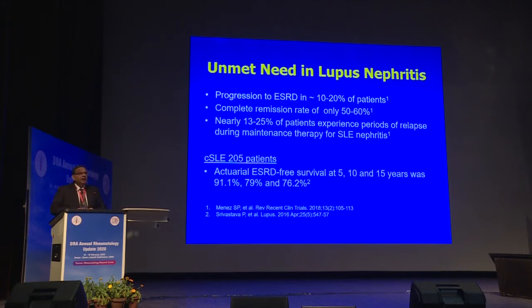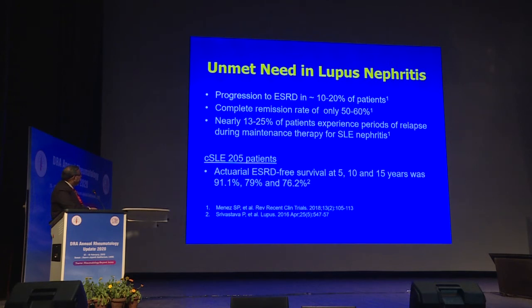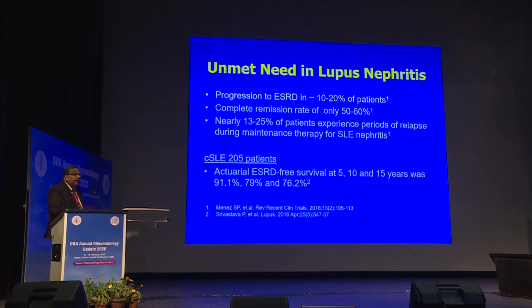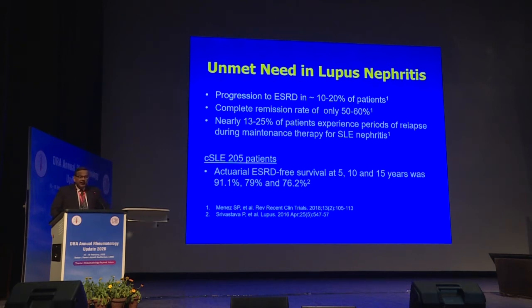Despite advances, significant unmet needs remain in lupus nephritis. Ten to twenty percent of patients progress to end-stage renal disease. Complete remission is achieved in only 50 to 60 percent, and nearly one-fourth experience relapses during maintenance therapy — whether a proteinuric flare or frank renal relapse. Data from PGIMER shows end-stage renal disease-free survival at 15 years is about 75 percent in our country. The major killers are infections and renal disease, which is why new agents are needed.